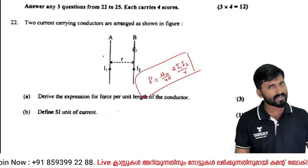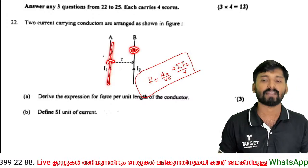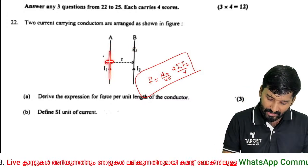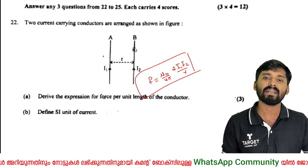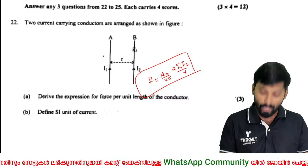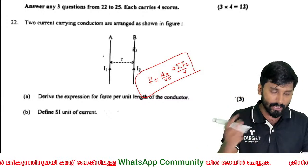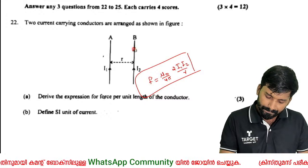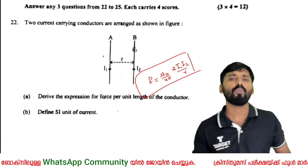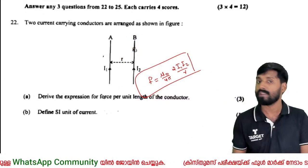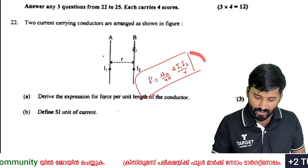The field created by one conductor acts on the other. The force is F = I × L × B, so the force per unit length F/L gives the required expression for the force between two parallel current-carrying conductors.